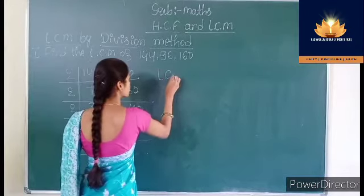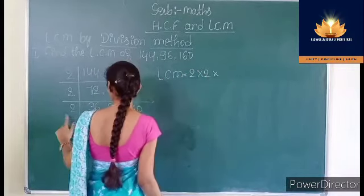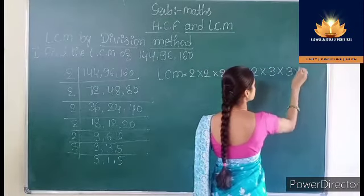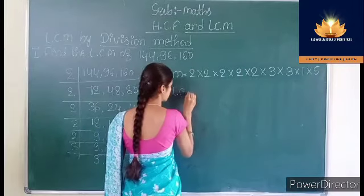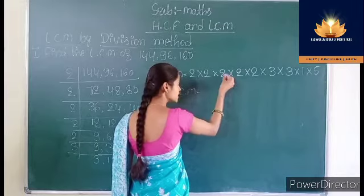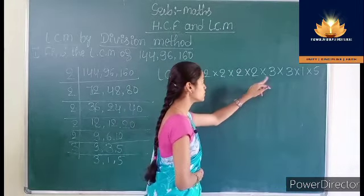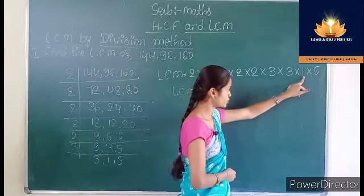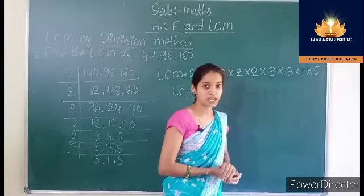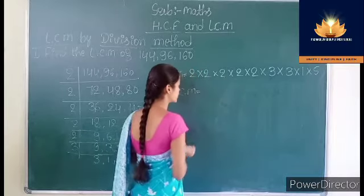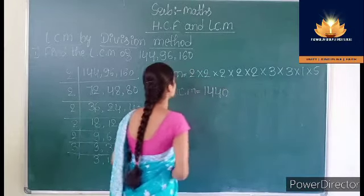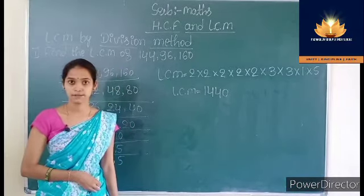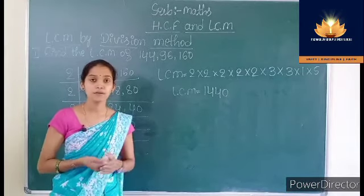To find the LCM, we multiply all the divisors and all the numbers remaining in the last row. LCM = 2×2×2×2×3×3×1×5 = 4×8=32, 32×3=96, 96×3=288, 288×5=1440. So we get 1440 as the LCM. The LCM of 144, 96, and 160 is 1440.